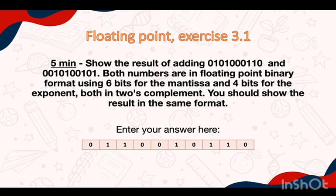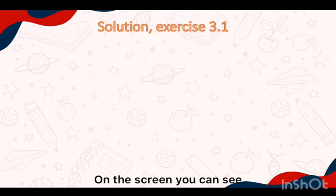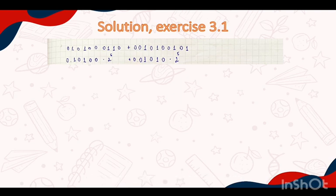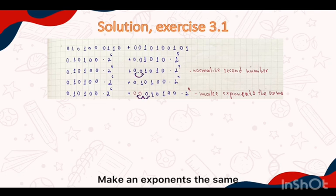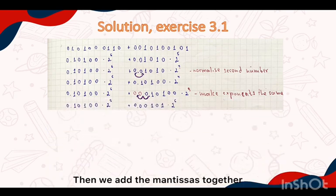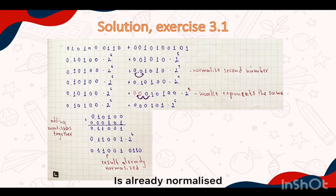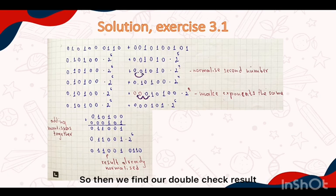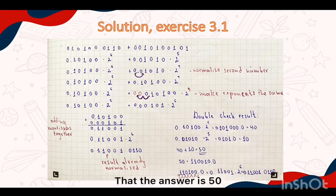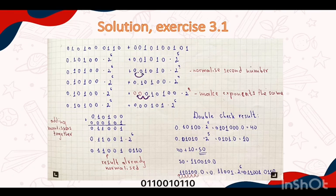Here is part 3. On the screen you can see the calculations for the sum. Firstly we normalized the second number and then made the exponents the same in order to sum them. Then we added the mantissas together and see that our result is already normalized. We find our double-check result and see that the answer is 50, but we need to write it in the same format. So the answer is 0 1 1 0 0 1 0 1 1 0.